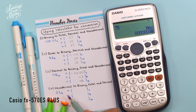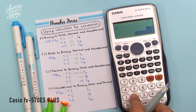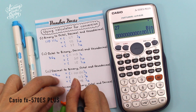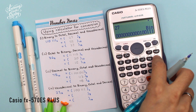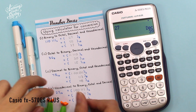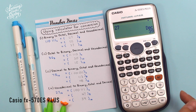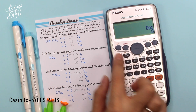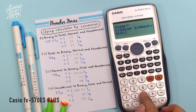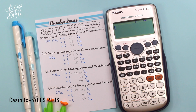Next is 27 base 16. Change to base 2 — press BIN — it's 100111. Change to base 8 — press OCT — it's 47. And change to base 10 — press DEC — it's 39. To clear the calculator and go back to normal mode, press SHIFT, then CLR at button 9, press 3 for clear all, press equals to confirm yes, then press the AC button. Now you're back to normal mode.